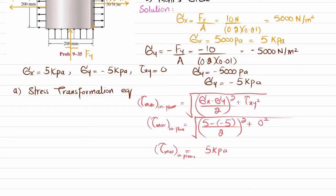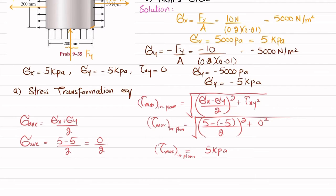Now we find the average normal stress. The average normal stress equals (σx + σy)/2 = (5 + (−5))/2 = 0/2 = 0. So the average normal stress is 0.